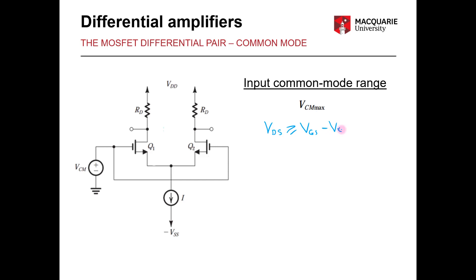And so it's clear from this that if we increase our common mode input voltage that will increase VGS and could drive our amplifiers out of saturation.